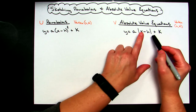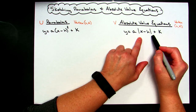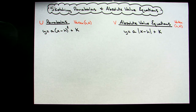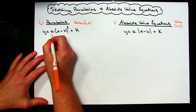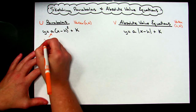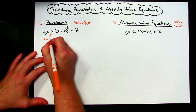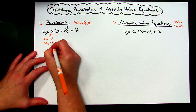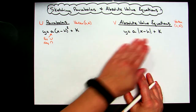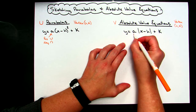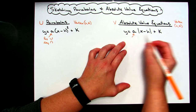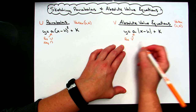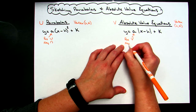The absolute value bars tell you it's an absolute value equation and give you a clue it's going to be a V. The leading coefficient a — when it is positive, the U will be upright; when it is negative, it will be an upside-down U. The same pattern applies to the absolute value equation: positive a gives an upright V, negative a gives an upside-down V.